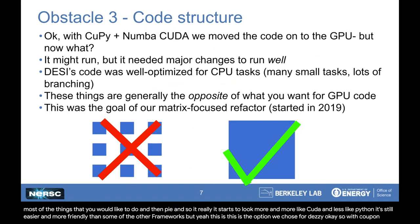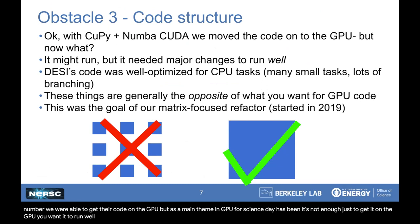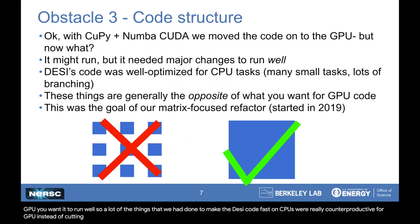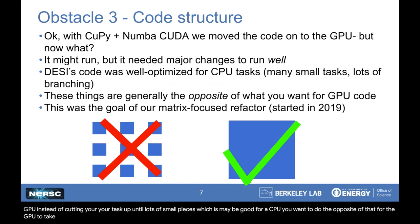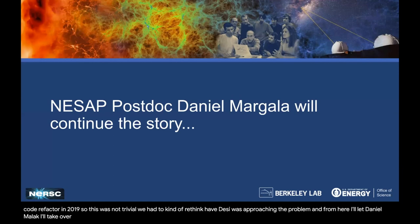With CuPy and Numba we were able to get their code on the GPU. But as a main theme at GPU for Science Day has been, it's not enough just to get it on the GPU — you want it to run well. A lot of the things we had done to make the DESI code fast on CPUs were really counterproductive for GPU. Instead of cutting your task up into lots of small pieces, which is maybe good for a CPU, you want to do the opposite for the GPU to take advantage of the massively parallel nature of a GPU. So we started a major code refactor in 2019 — this was not trivial. We had to rethink how DESI was approaching the problem, and from here I'll let Daniel Moakala take over and tell you the rest of the story.